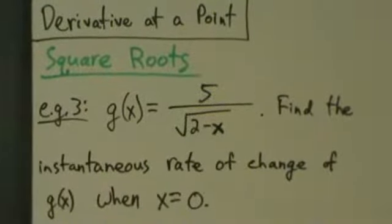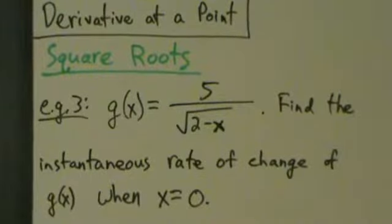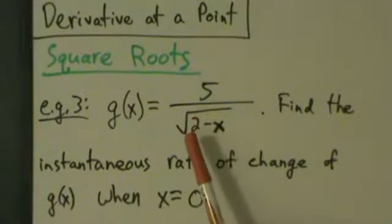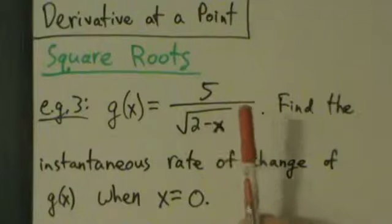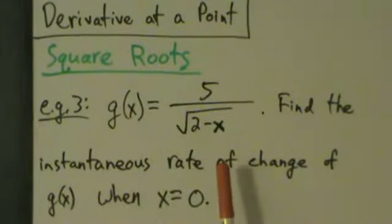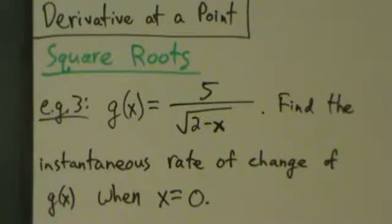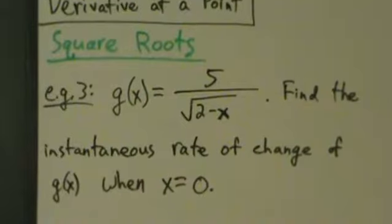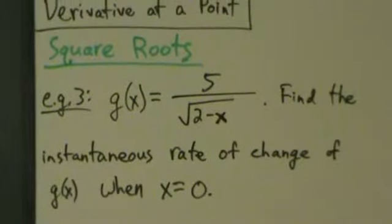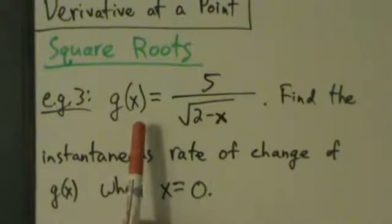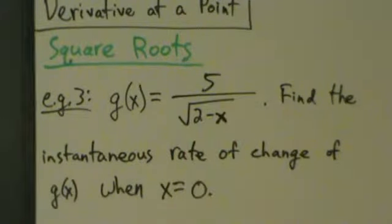Here's one more example of a derivative at a point with functions that have square roots. So g of x is 5 divided by the square root of 2 minus x, and we want to find the instantaneous rate of change of g of x when x is 0. Remember, instantaneous rate of change is the derivative. So this question is asking the same thing we've been asking, which is just find the derivative. This function g of x is a little more complicated than all the ones we've dealt with so far, so this is going to be a bit of a headache, but it's good to see ones like this.